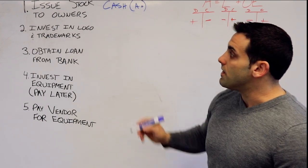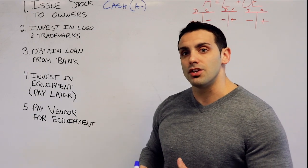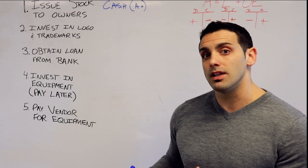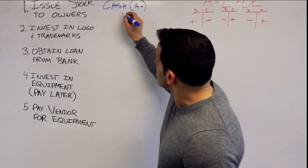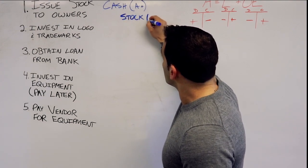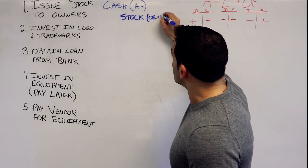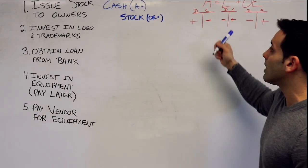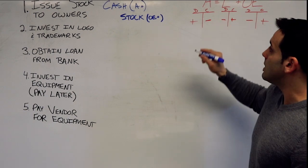And if the company is issuing stock, it's increasing its equity. So we're going to have stock is also increasing. Now we can analyze this further and see, let's say they're contributing $10,000.